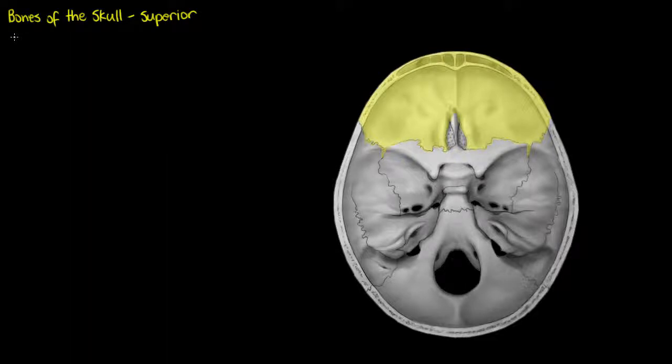The first bone here that I've highlighted in yellow is our frontal bone, the bone above our eyes and the most anterior of our cranial bones.